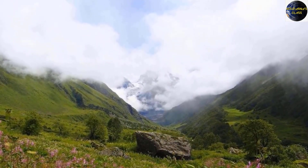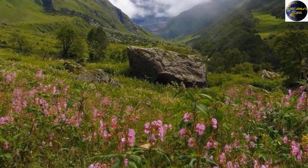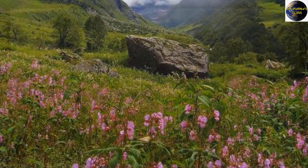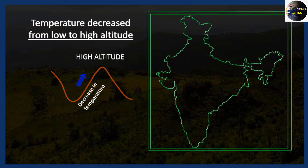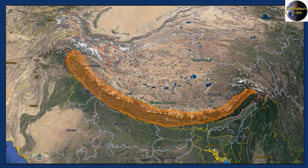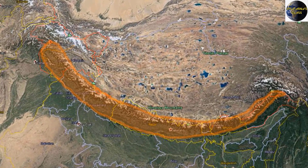Now we are going to discuss mountain vegetation. Mountain means land with higher elevation. You are familiar with the normal lapse rate — when altitude increases, temperature decreases — and with a change in temperature there will be a change in natural vegetation. In mainland India, mountains are found in the northern part — the Himalayas — stretching from the north-west to the north-eastern part of India.